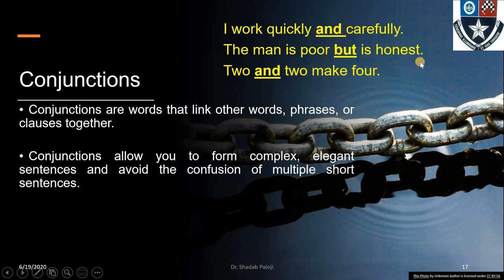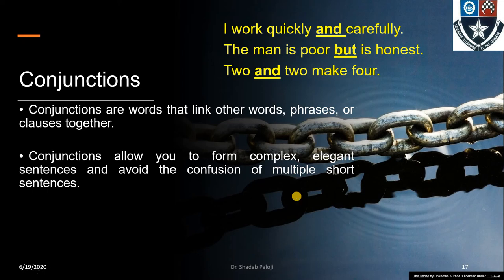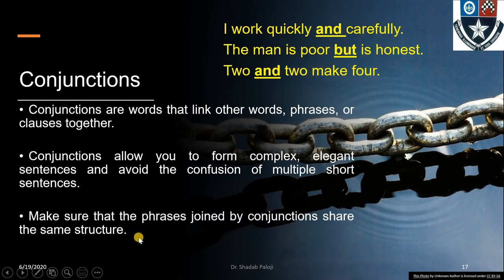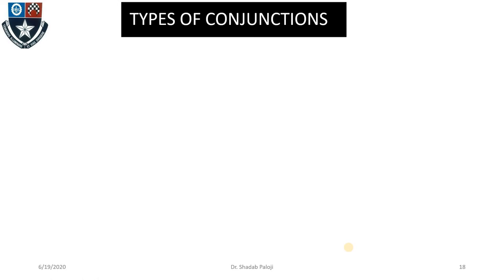'The man is poor. The man is honest.' — how many sentences do we make that repeat the same thing? Conjunctions help compile it into one statement, making sentences more elegant and crisp. We must also make sure that phrases joined by conjunctions share the same structure. 'Quickly and carefully' — both are adverbs. 'Poor and honest' — both are adjectives. 'Two and two' — both are numeral nouns. Equal grammatical structure is important.